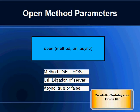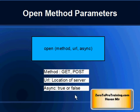In the Async parameter, you choose the asynchronization mode — either true or false. True means the request will be asynchronous; otherwise it will be synchronous.